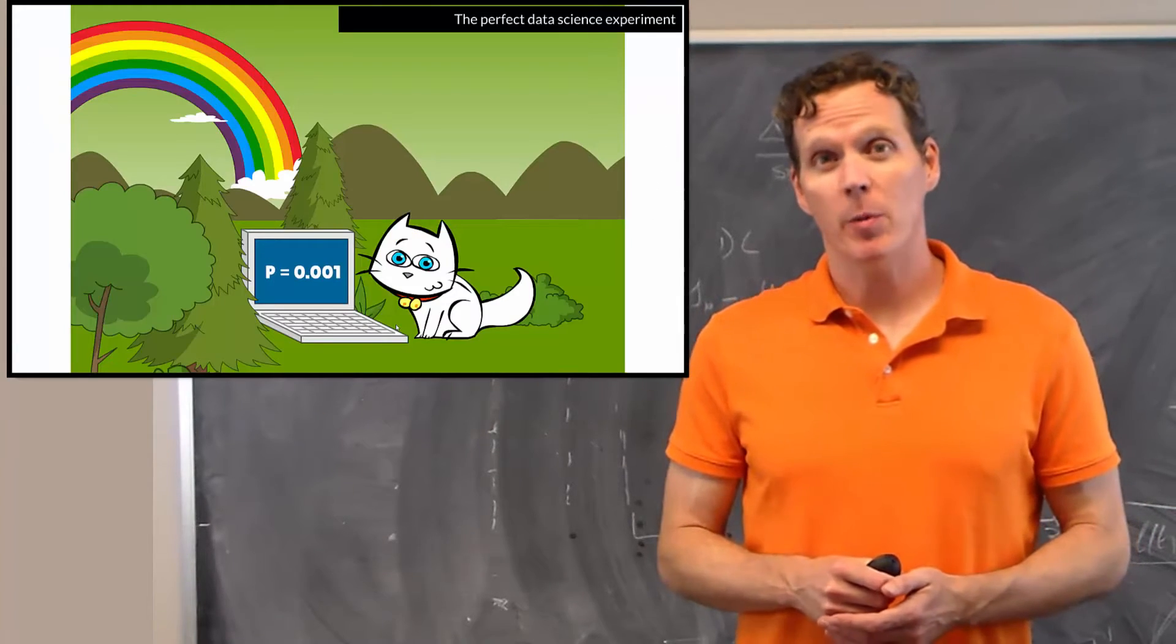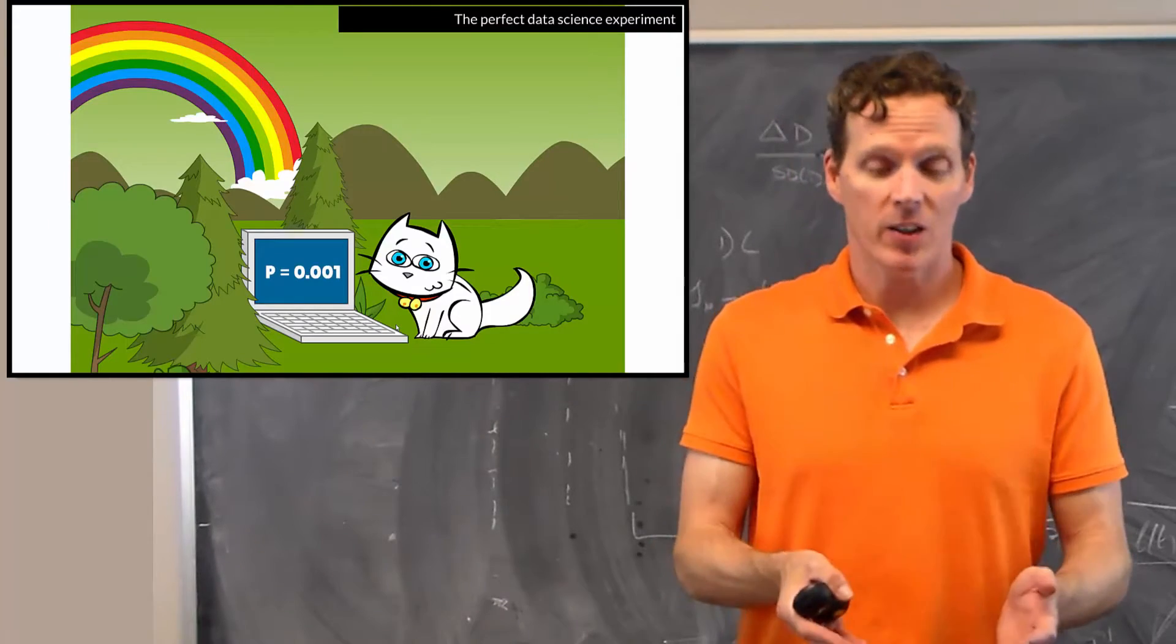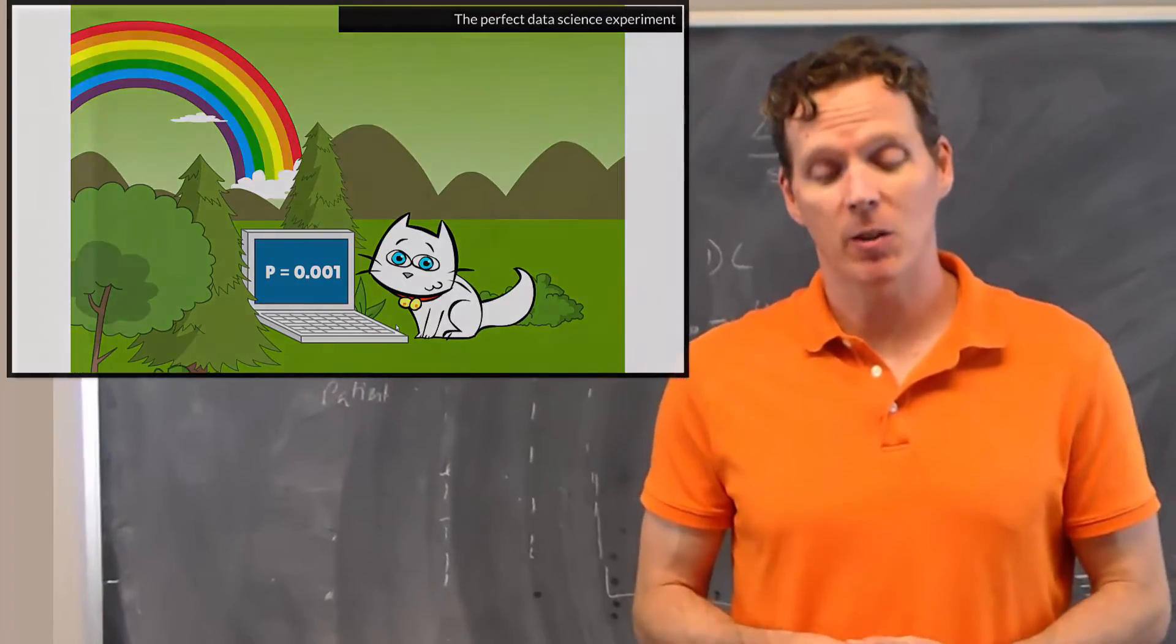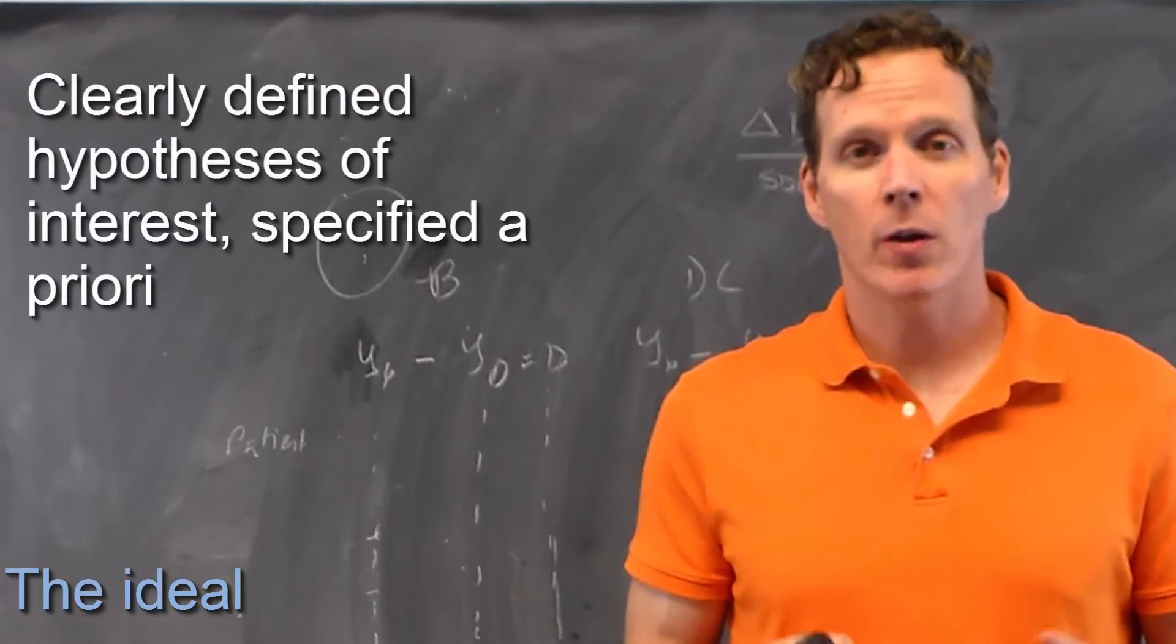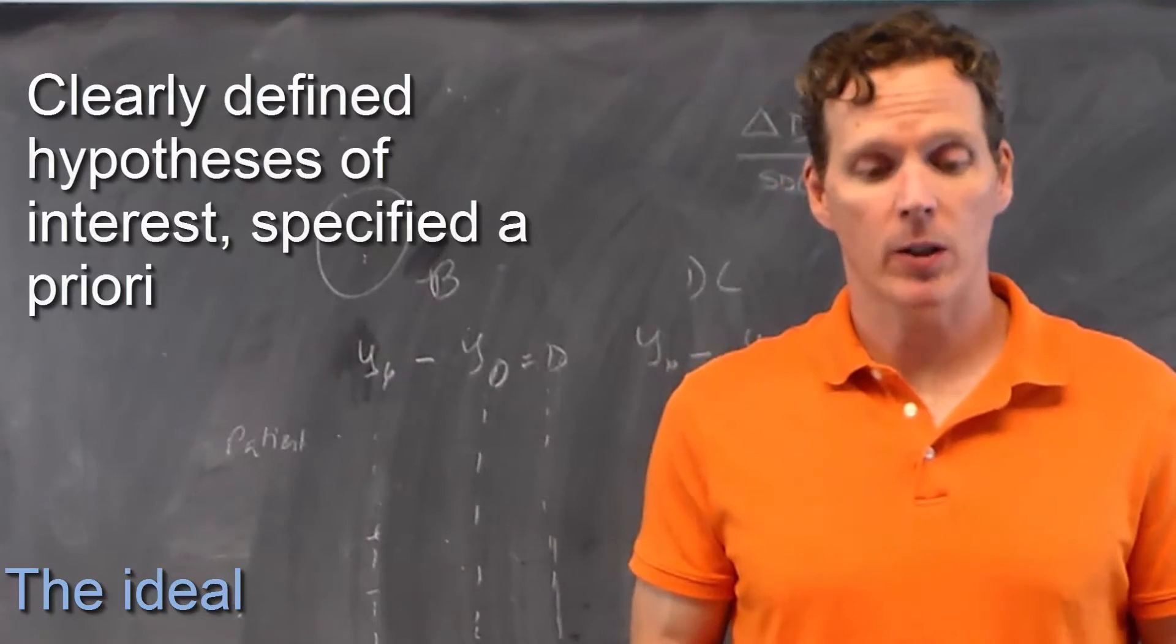Let's start by talking about the perfect data science experiment. Here we've got the happy little cat looking at a highly significant p-value. So in the perfect data science experiment, you have clearly defined hypotheses that are specified a priori.